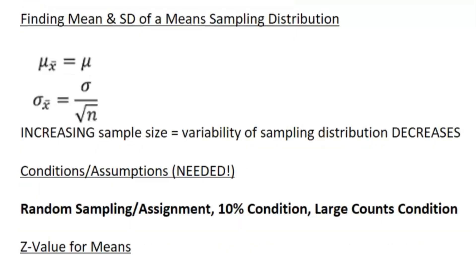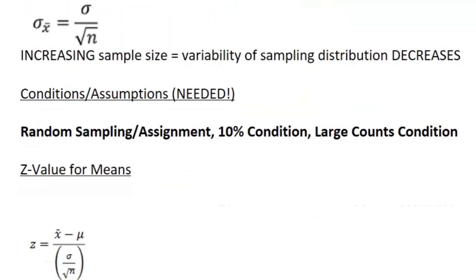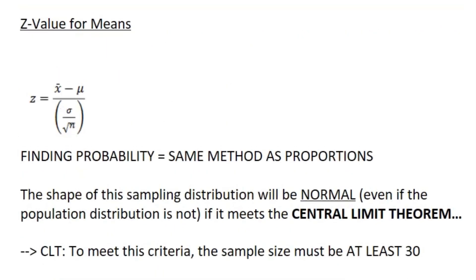Increasing sample size is going to decrease the variability, same as before. You also need to meet pretty much the same conditions: random sampling and assignment, 10% condition, and large counts condition. I do want to note that random assignment is usually only for experiments. If you're doing samples, it's usually just random sampling.